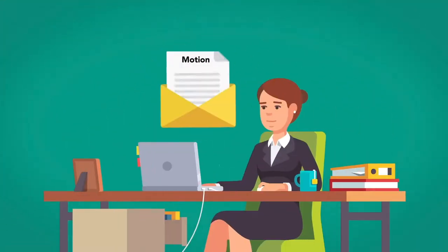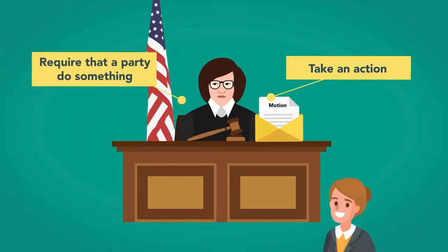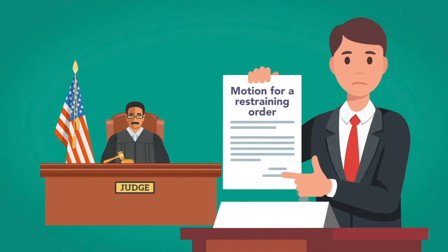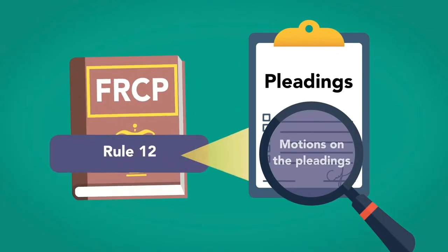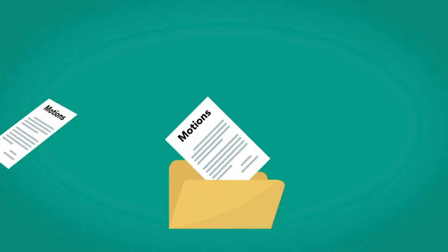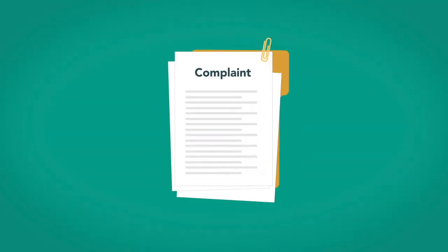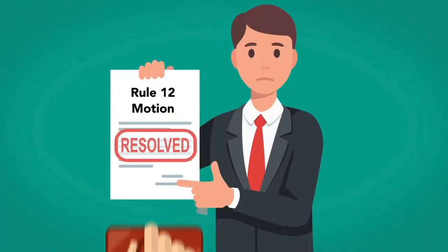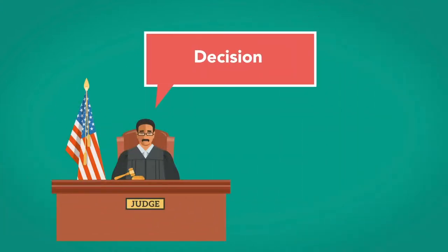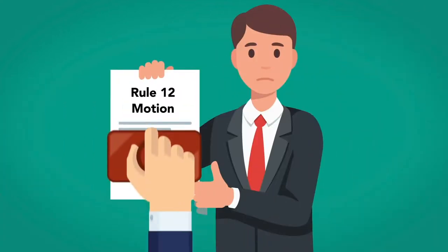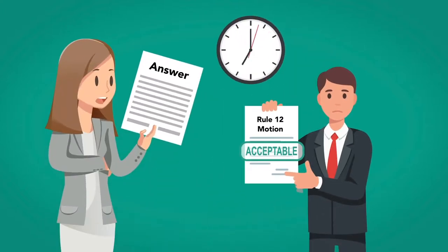A motion is a formal request to the judge to either take an action or to require that a party do something. An example of the former would be a motion to dismiss the case, while the latter might be a motion for a restraining order. However, we will focus on motions on the pleadings, which are covered by Rule 12 of the Federal Rules of Civil Procedure. The defenses may be written into the pleadings or they may be filed as separate motions. They are motions to dismiss a case or otherwise do something with the complaint because of structural problems with the complaint or the case itself. Rule 12 motions are filed before pleadings are filed. A Rule 12 motion can resolve a case before it gets started, allowing a court to come to a decision before the major part of the litigation begins. If it does not resolve the case, the answer must then be filed. A Rule 12 motion is an acceptable alternative to an answer for purposes of the time limitations on filing.